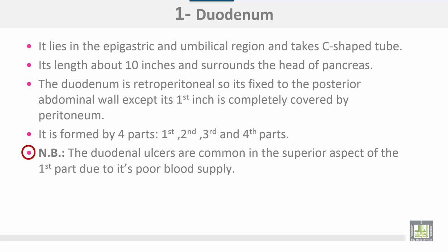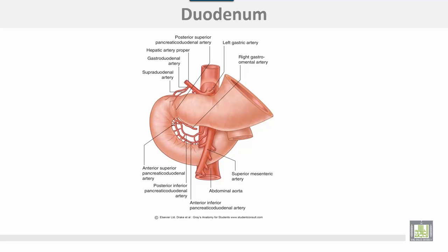Duodenal ulcers are common in the superior aspect of the first part of the duodenum due to its poor blood supply. This is the duodenum with its different parts: first part, second, third, and fourth part.